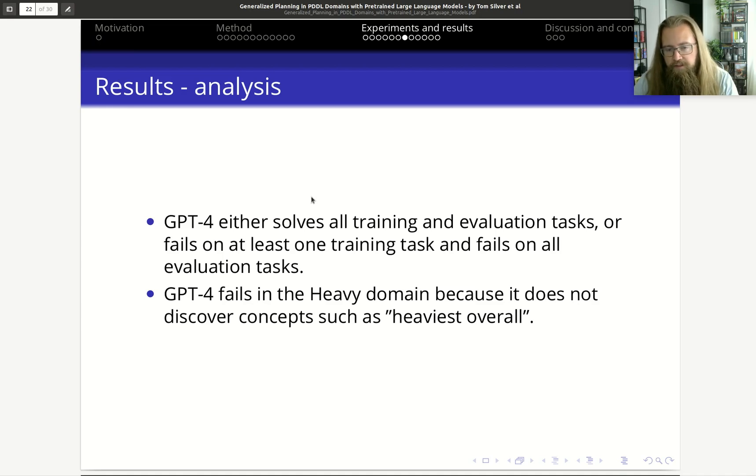ChatGPT-4 fails on the Heavy domain because it's not able to discover the concept of "heaviest overall," which is very useful in this case because you want to start with the most heavy objects in the box.